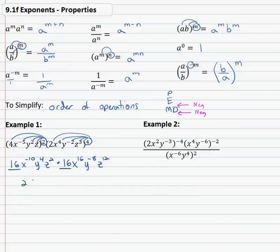Sixteen times sixteen is 256. Multiplying the x's together, we know that means we have to add the exponents. So we get x to the negative ten plus sixteen is six. Y to the four plus negative eight is negative four. Z to the two plus twelve is fourteen.